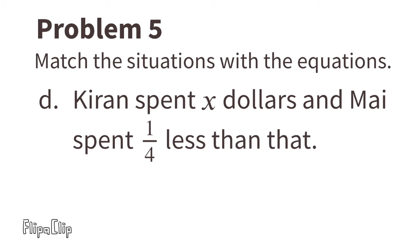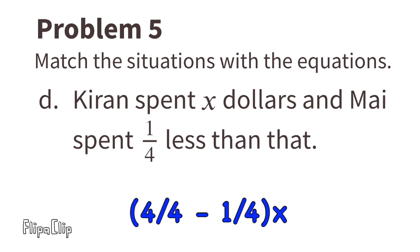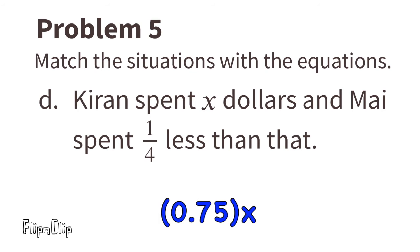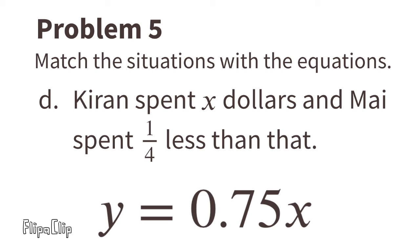Situation D: Kieran spent x dollars and Mai spent one fourth less than that. We're looking for an equation where y equals one fourth less than x. Four fourths minus one fourth equals three fourths, and three fourths equals 0.75. So the matching equation is y equals 0.75x, or y equals seventy-five hundredths x.